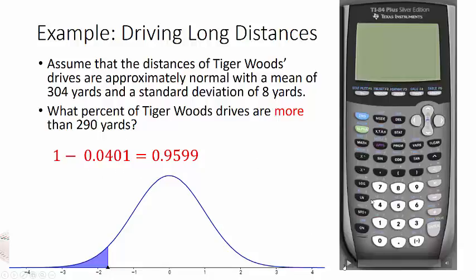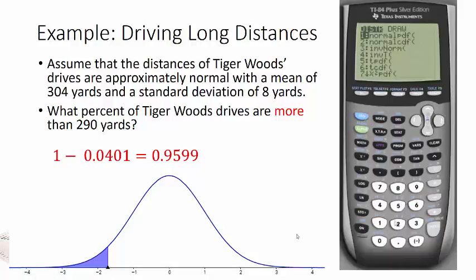But I can also do it with the calculator. So we'll do second distribution. And since I'm going to the right, I'm going to use a thousand for the right value. So I'm going to have the negative 1.75, comma, and there we go. And hit enter, and we get pretty much the same answer.